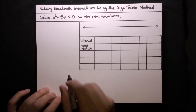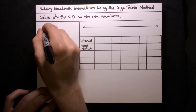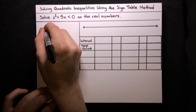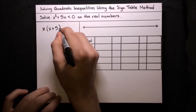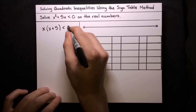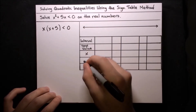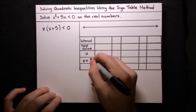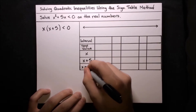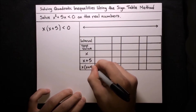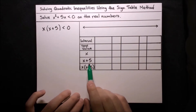Let's factor this left-hand side. x squared plus 5x is less than 0. We just factor out an x and get x times x plus 5, is less than 0. So the two factors are x and x plus 5, and then the entire quadratic can be written as x times x plus 5. All right, so that's the setup for our sine table.